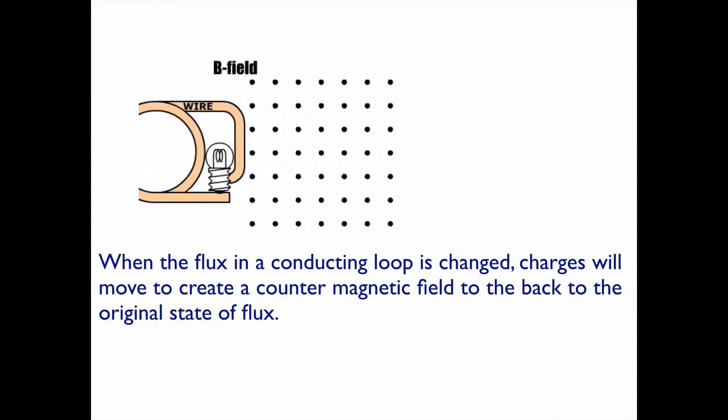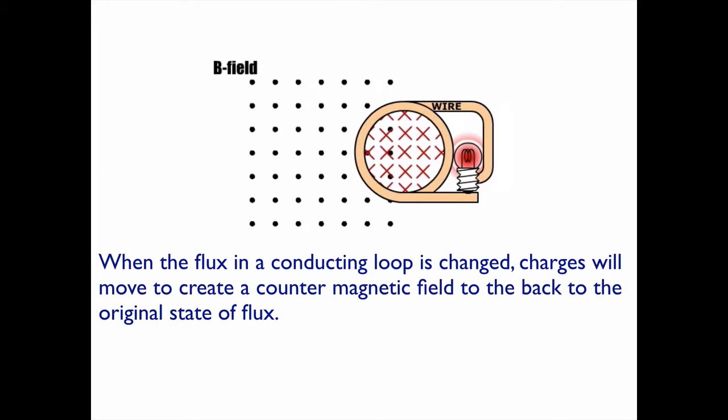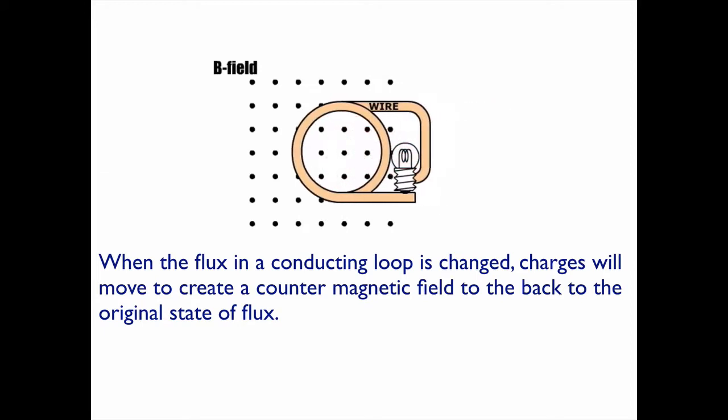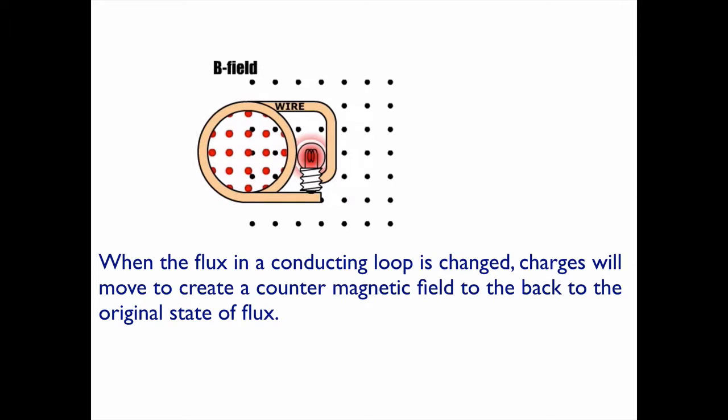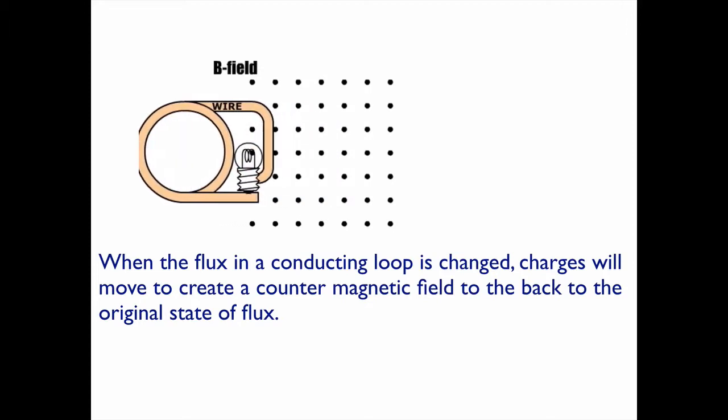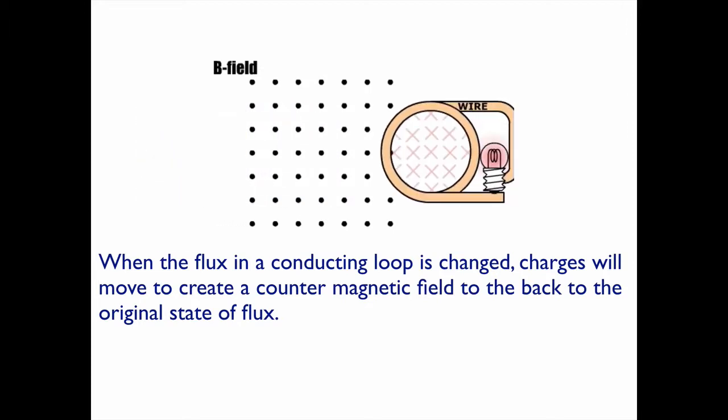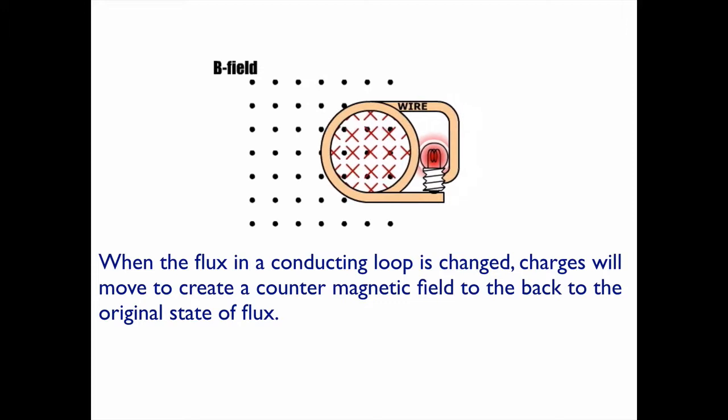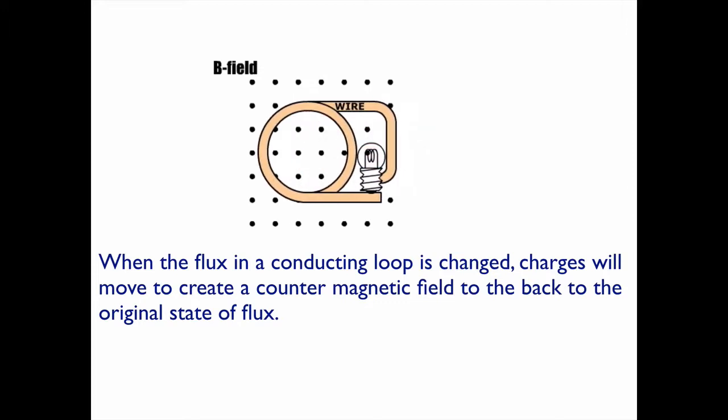As it leaves the magnetic field, because it's gotten to some kind of equilibrium point, which is steady state, as it leaves the magnetic field, it starts to lose magnetic field coming out, so charges will move in that loop, that closed shape, to generate more magnetic field coming out.